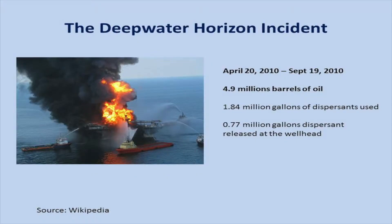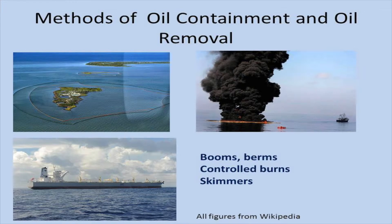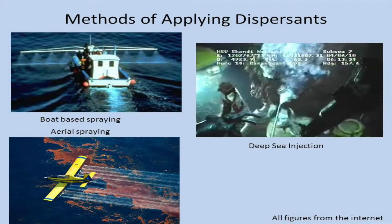Here's the Deepwater Horizon incident. What is really remarkable is how much dispersant was used. When the incident happened, different techniques were used to contain and remove the oil — booms, berms, controlled burns, and skimmers. Dispersants had a lot of use in the Deepwater Horizon incident. They can be sprayed from boats or planes. And this was the first time dispersants were used in a deep-sea environment, where they were actually injected at the site of the discharge.